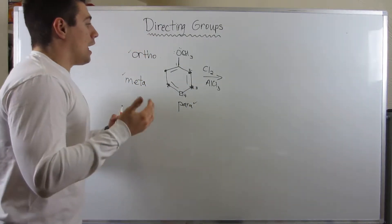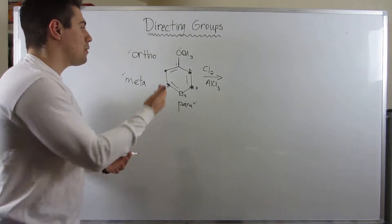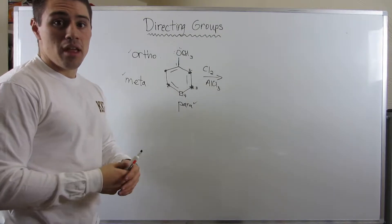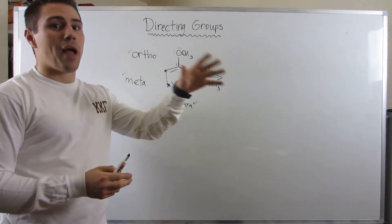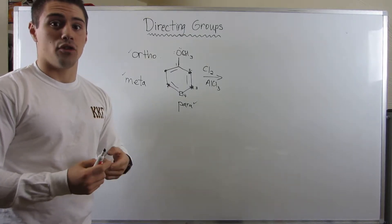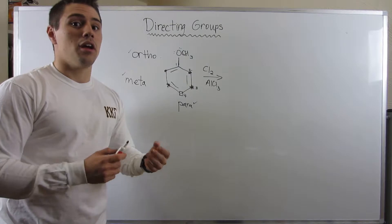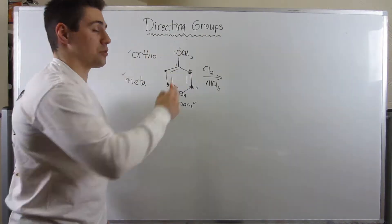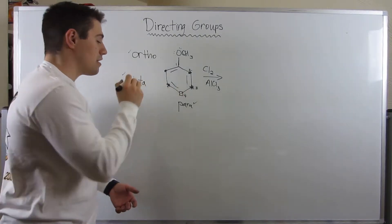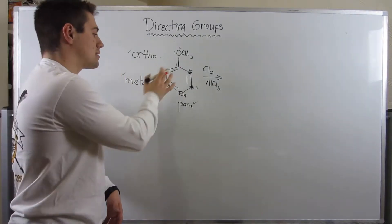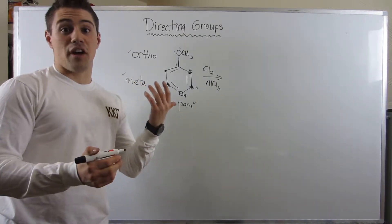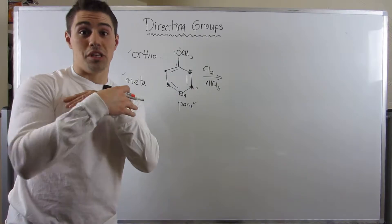So how do we know where a group goes — whether it's going to go ortho, meta, or para? If we throw it back to what we talked about in the Diels-Alder reaction involving electron donating and electron withdrawing groups, we have different types of directing groups: ortho-para directors and meta directors. We need to draw resonance structures — always fall back on resonance.